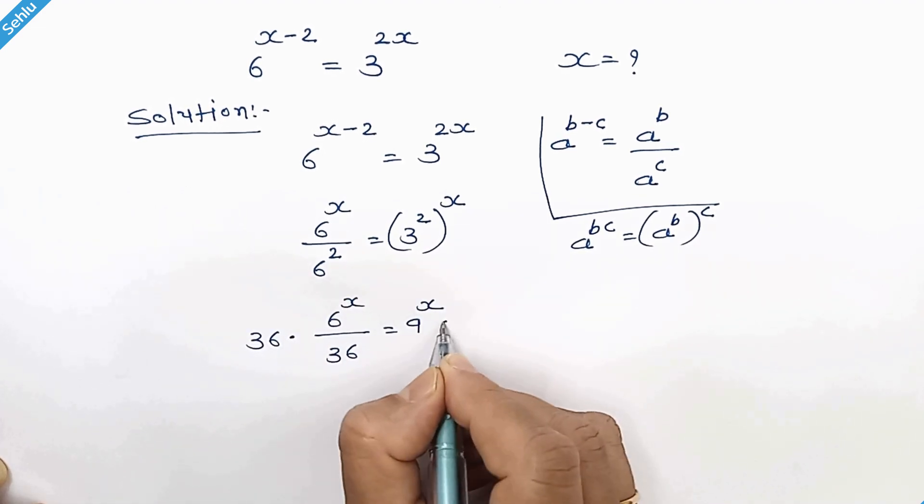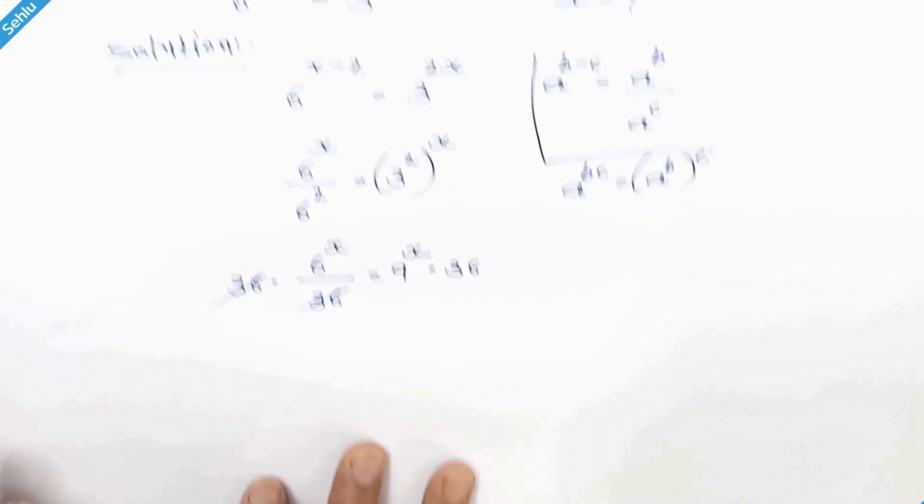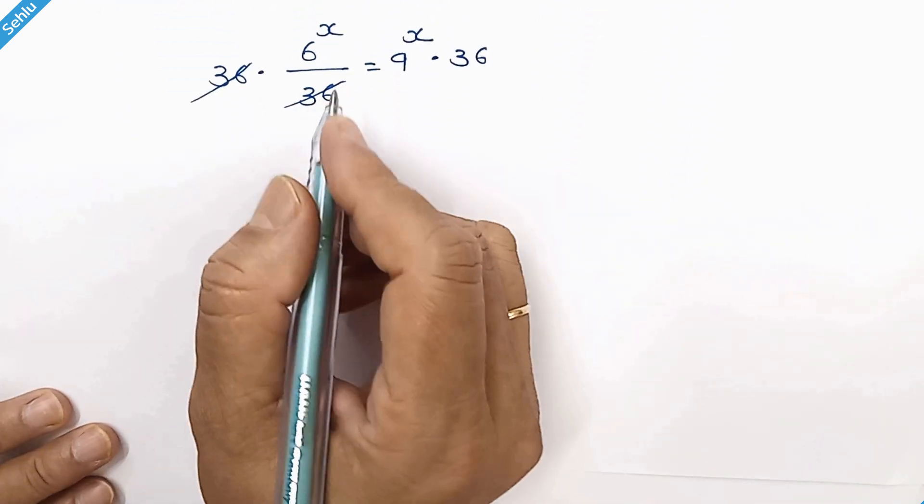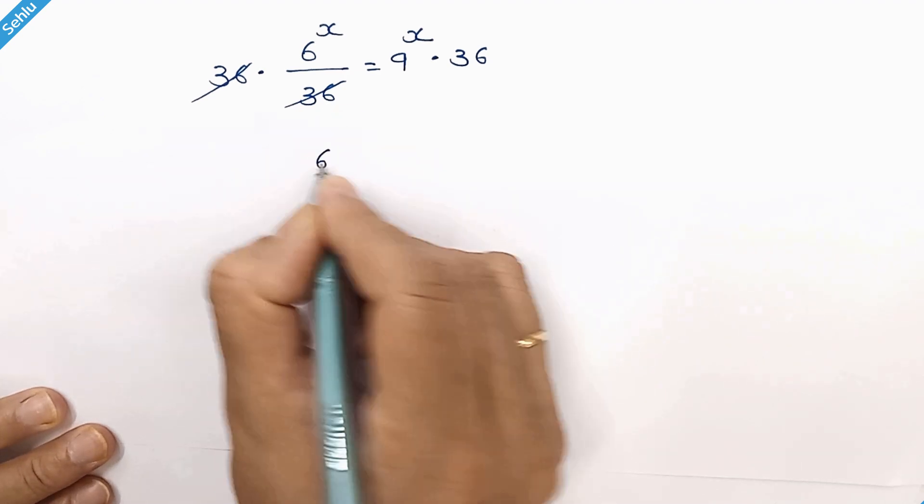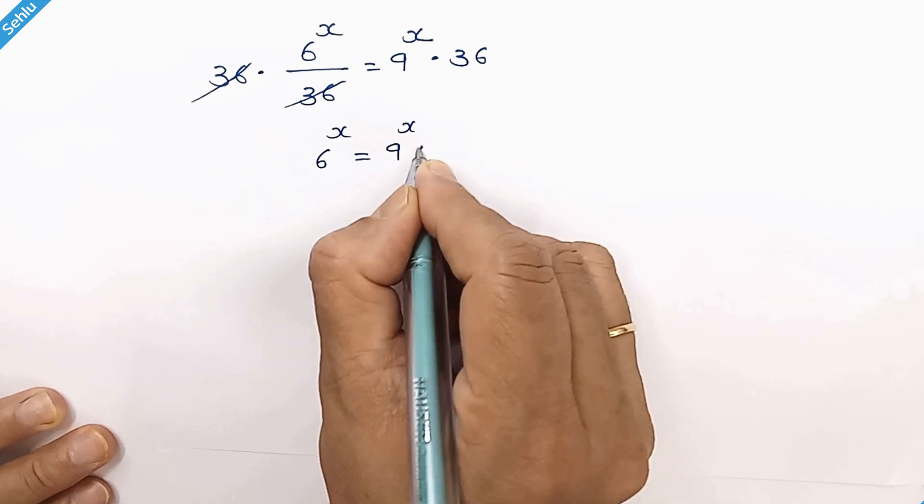Multiply with 36 both sides. So these two get cancelled out. Now we have 6 to the power x is equal to 9 to the power x times 36.